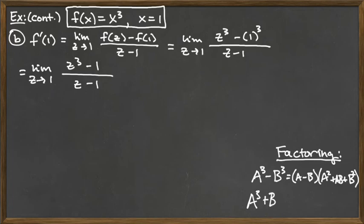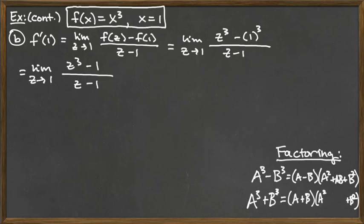The difference for a sum of cubes is that the cross term in the middle is a times positive b, but you switch the sign to negative ab — so that everything in the middle cancels when you multiply the right-hand side out to match the left. That's a side note on factoring both differences and sums of cubes.